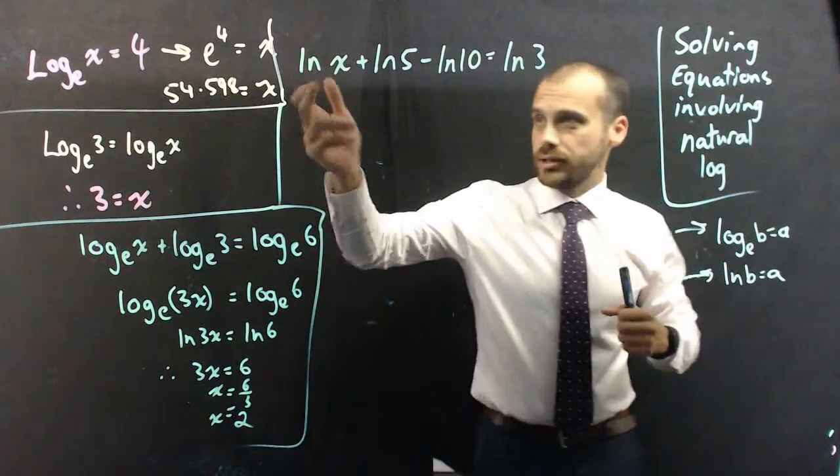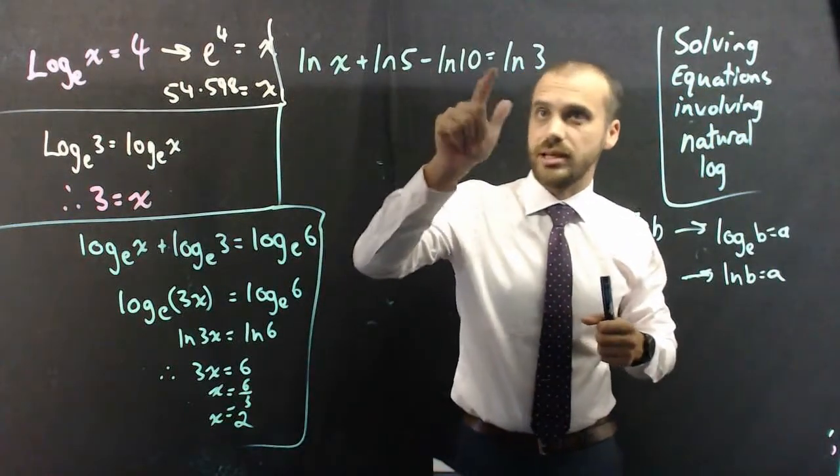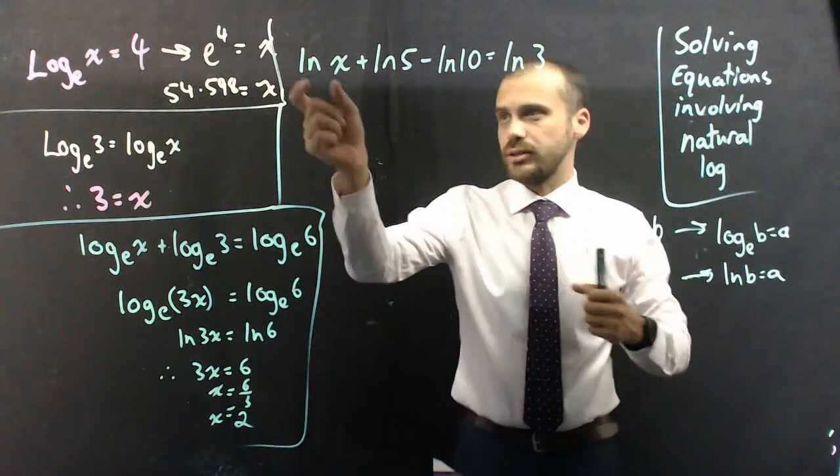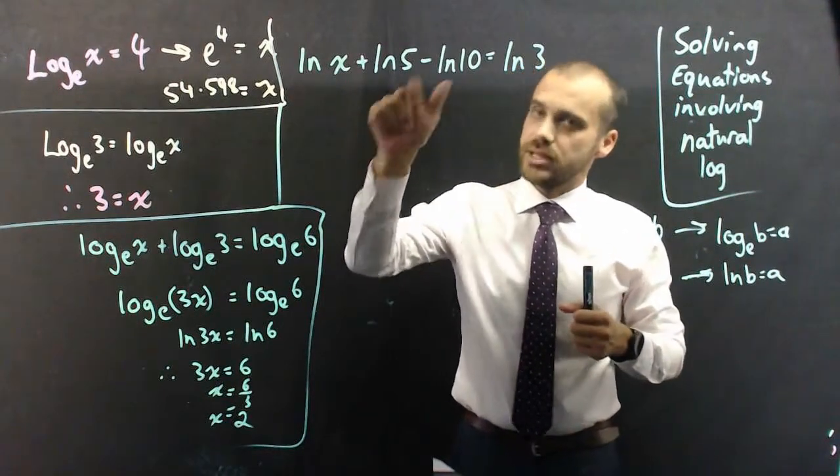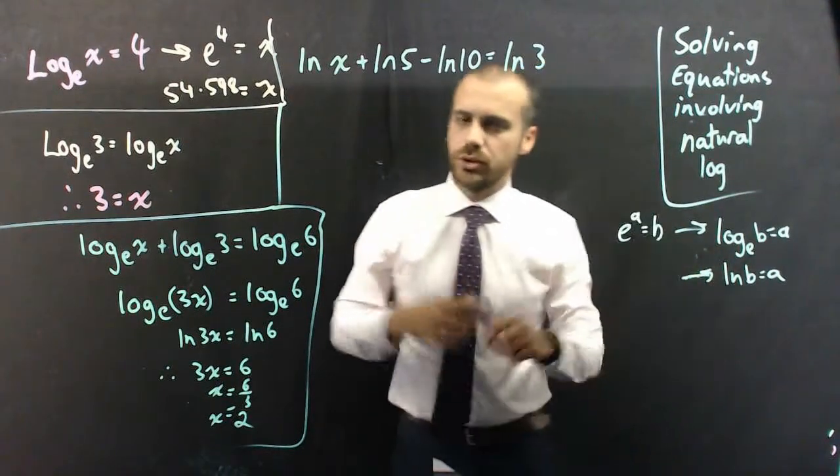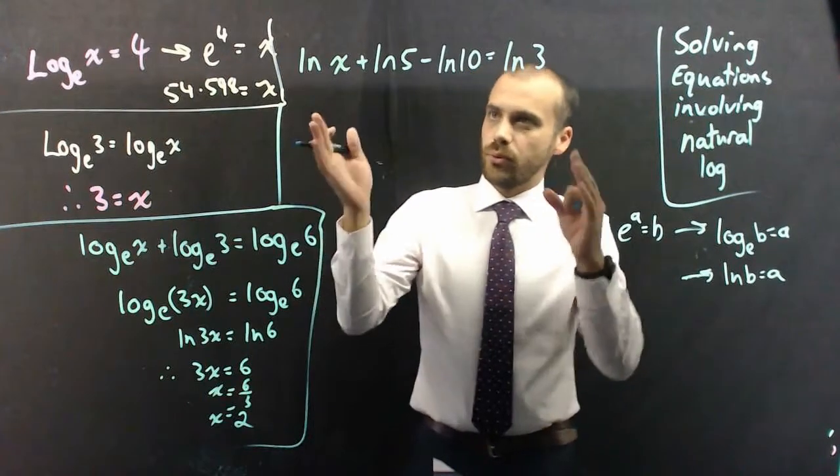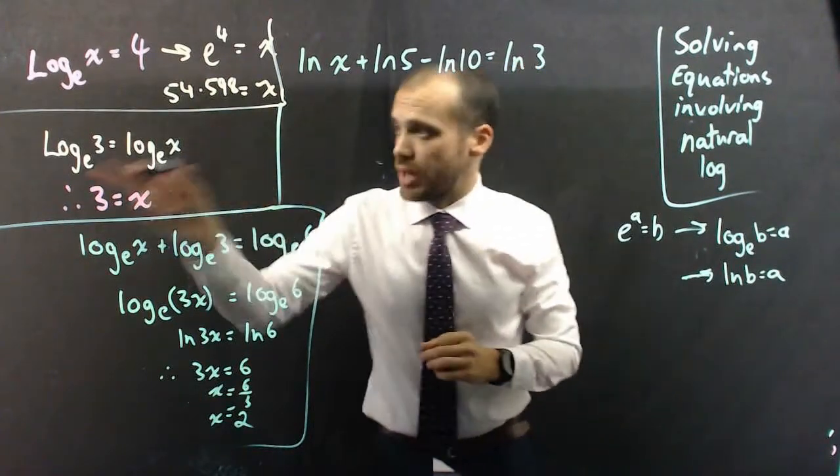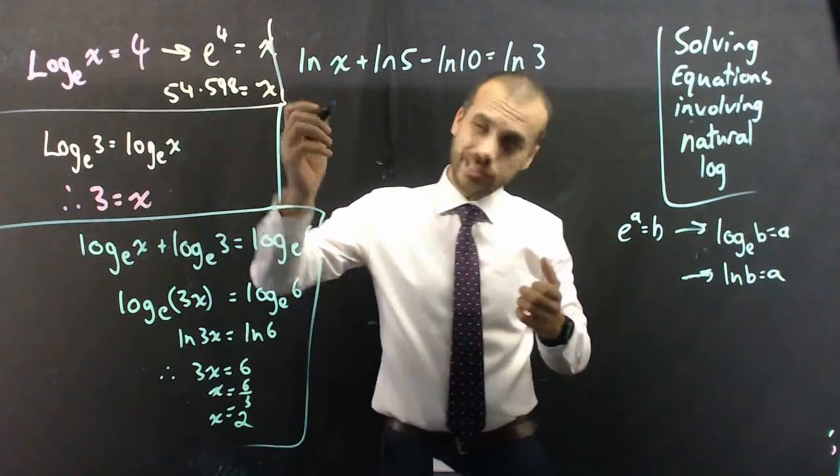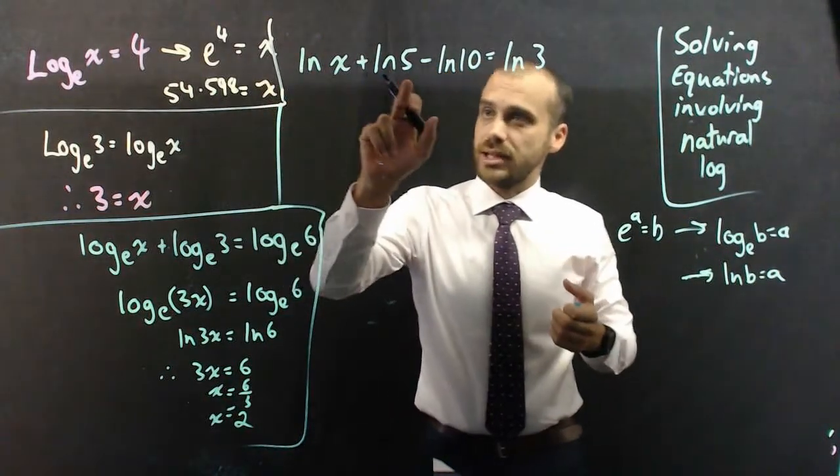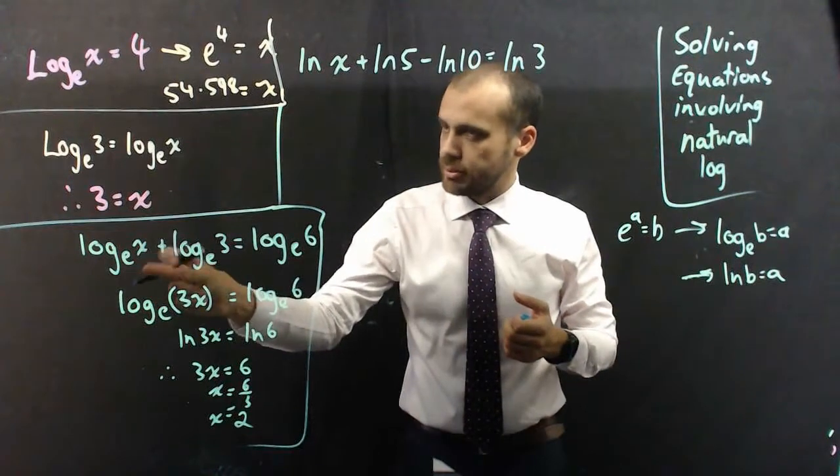So, one more step. ln x plus ln 5 minus ln 10 equals ln 3. I could have written log base e x plus log base e 5, but I couldn't be bothered. Now, we just need to get this with 4 logs, into that shape. So, ln x plus ln 5,